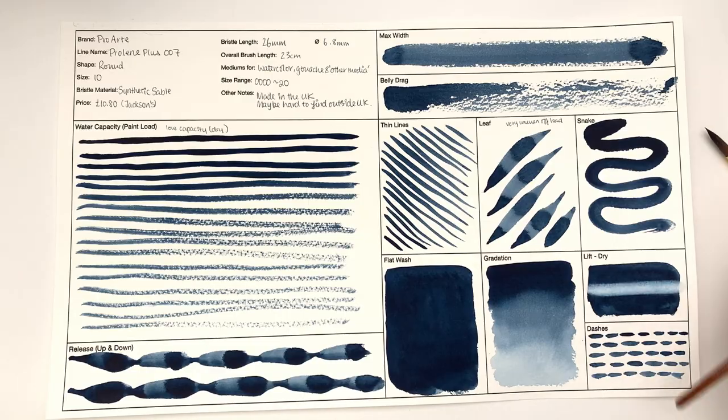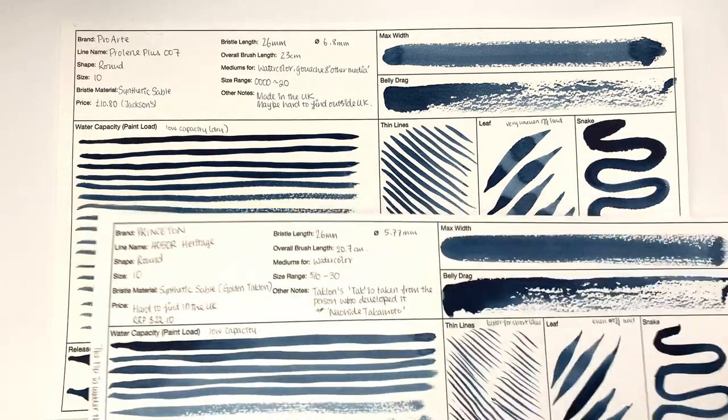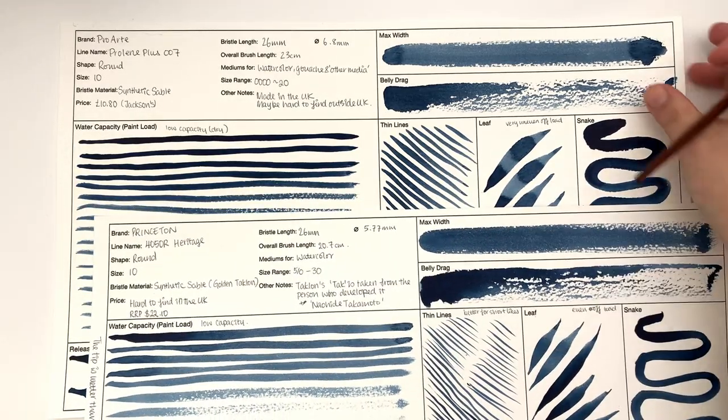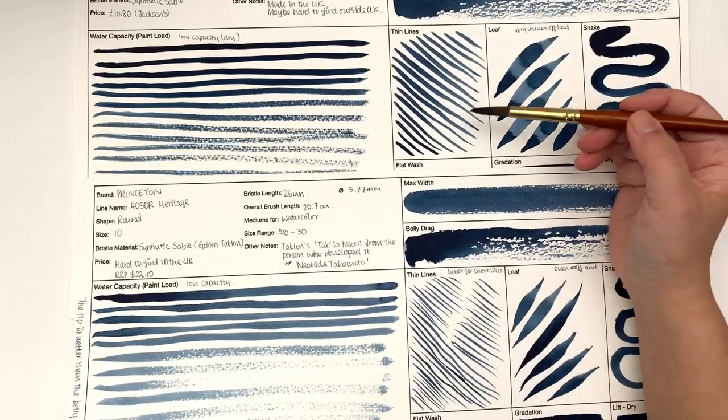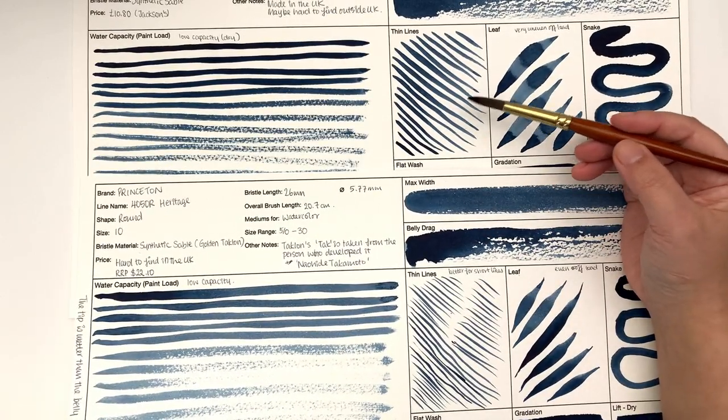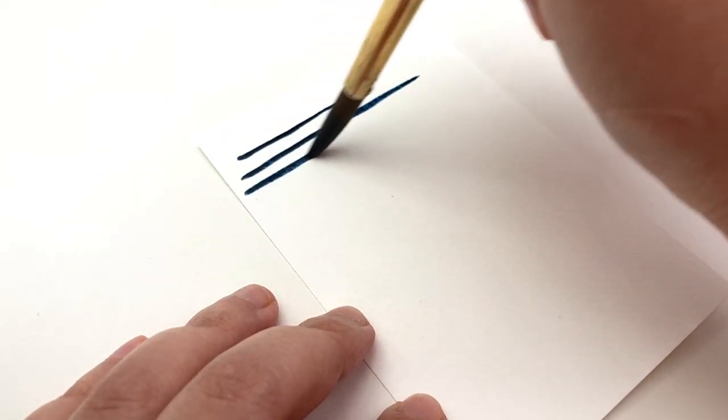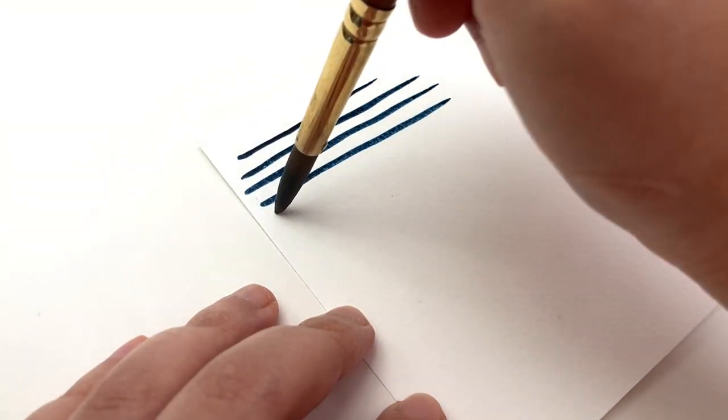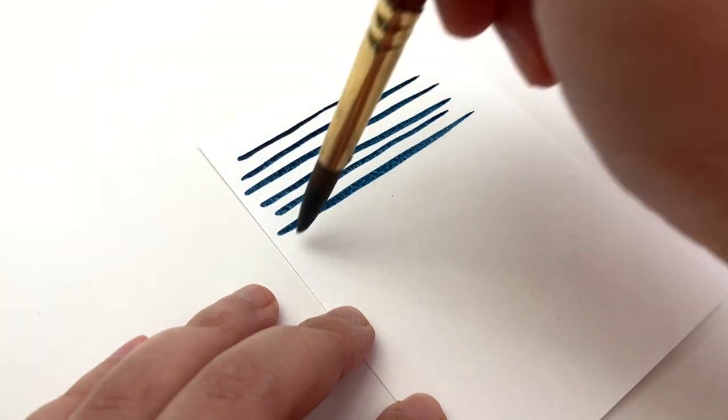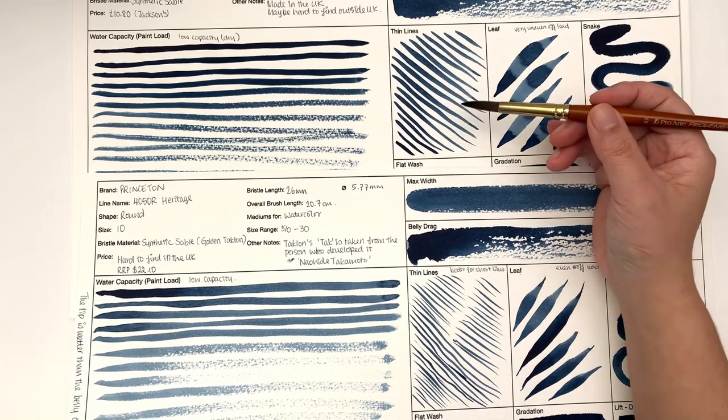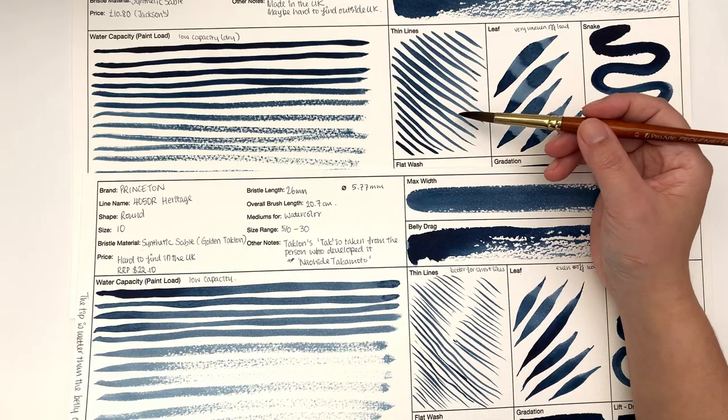In terms of thin line, let's compare it with the Princeton Heritage. This is Princeton Heritage. This is ProArt. You can see how much thicker this line is, but also it's much better at doing consistent, longer lines.